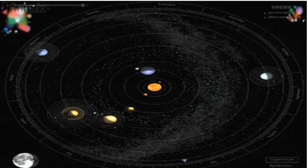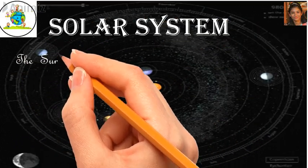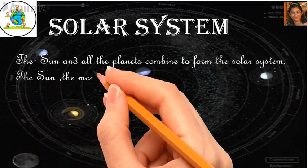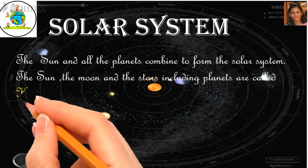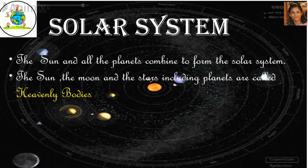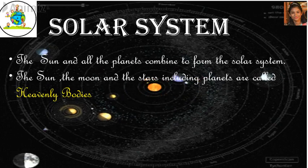Now, let's talk about the solar system. The sun and all the planets combine to form the solar system. The sun, the moon and the stars, including all the planets, are called the heavenly bodies. Now, let's talk about some planets.